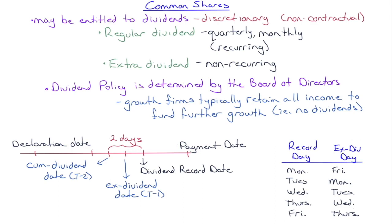Companies can also declare an extra dividend, which is non-recurring. They do this so they're not expected to maintain it. Even though regular dividends are discretionary, it's very hard to cancel one without major damage to the stock price — it signals something is wrong. So rather than raising the recurring dividend, companies may issue extra dividends occasionally. Costco is a great example: it maintains a low recurring dividend and every two years pays a special extra dividend.